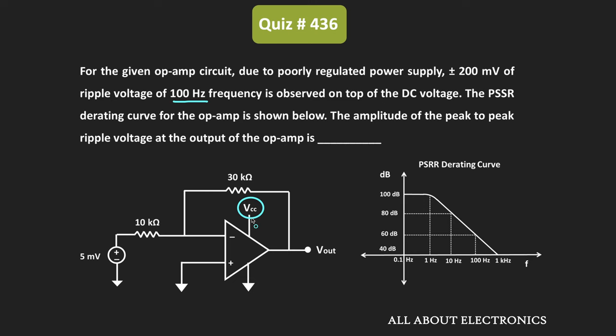How much ripple will be suppressed by the op-amp depends on the PSRR of the op-amp. We have also been given the PSRR derating curve for the operational amplifier. This op-amp will not be able to suppress the entire ripple voltage, hence some fraction of the ripple voltage will appear at the output side. The amount of ripple voltage at the output depends on the gain of the op-amp as well as the PSRR at that particular frequency.